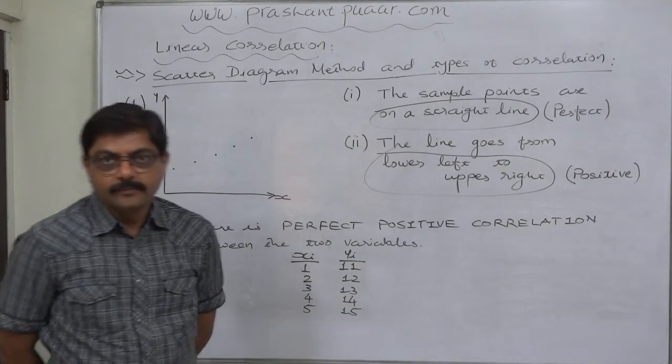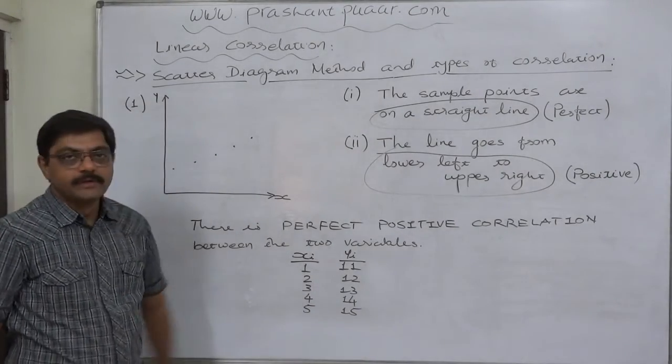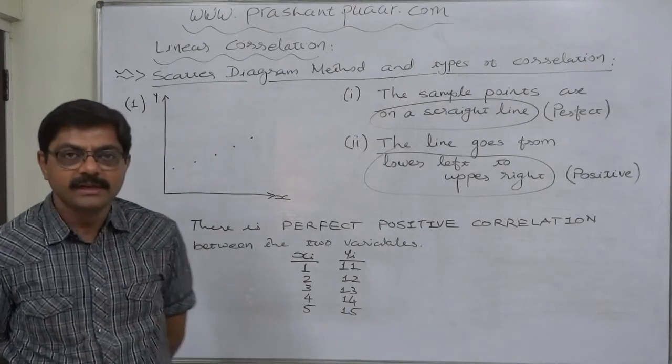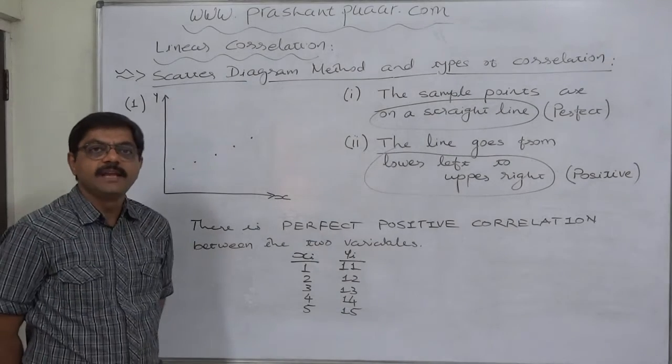Scatter Diagram means a graphical presentation of the two variables. If we have the data regarding two variables, first we have to take a graph paper.